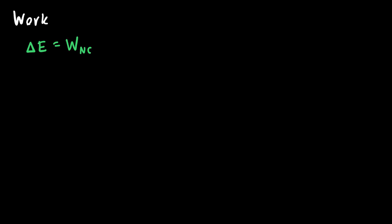Another way that we think of work is through the work equation, which says that work is equal to force times distance — not just any force, but the force that is parallel to the displacement vector, the direction in which the object is moving. This can also be written as F times D times cosine theta, where theta represents the angle between the force and displacement vectors.